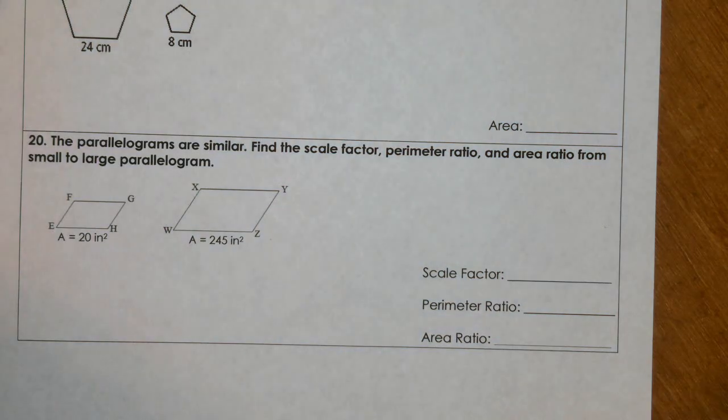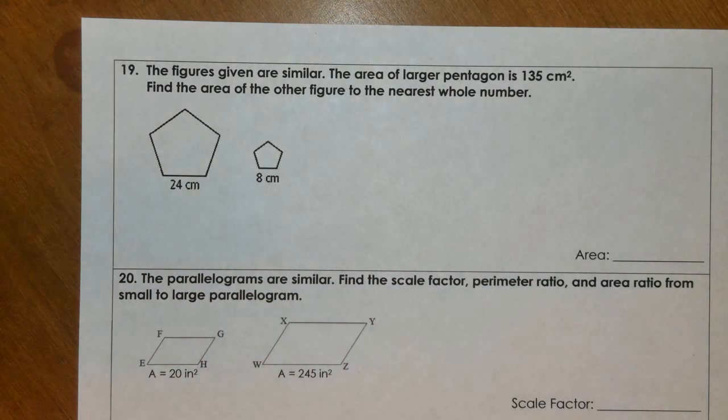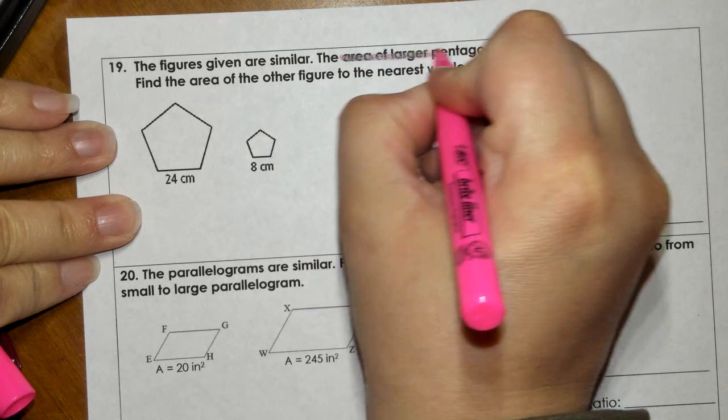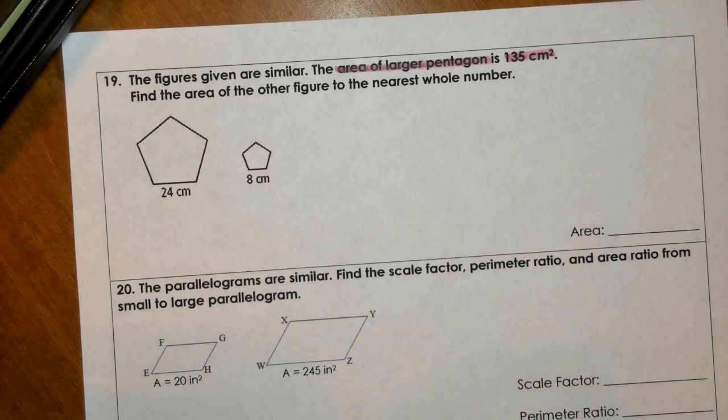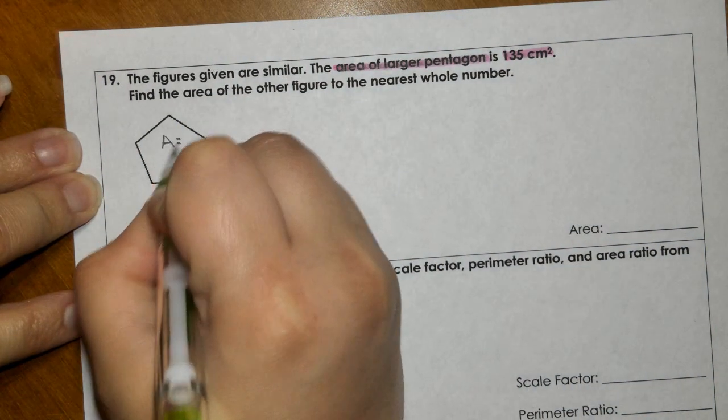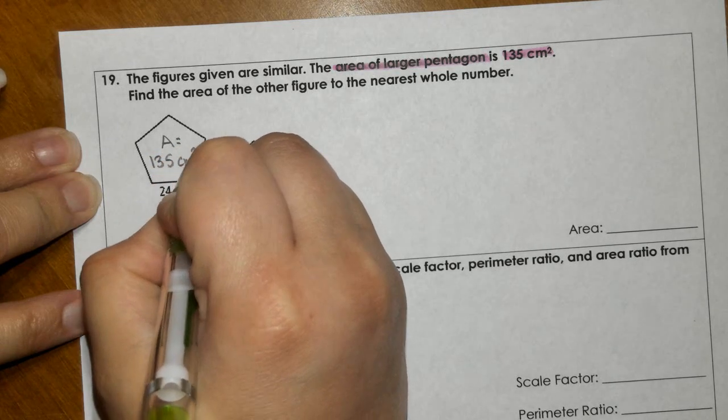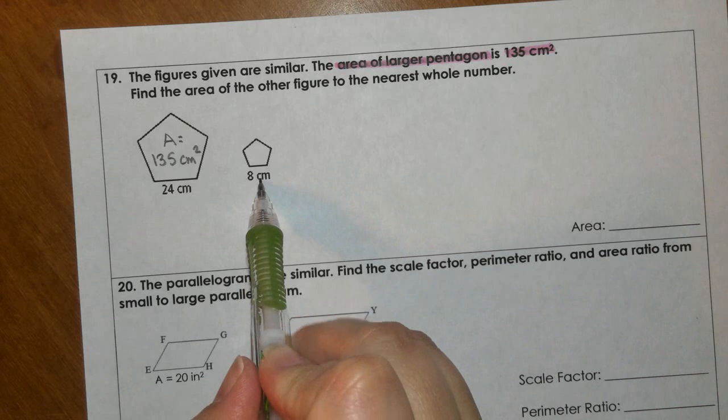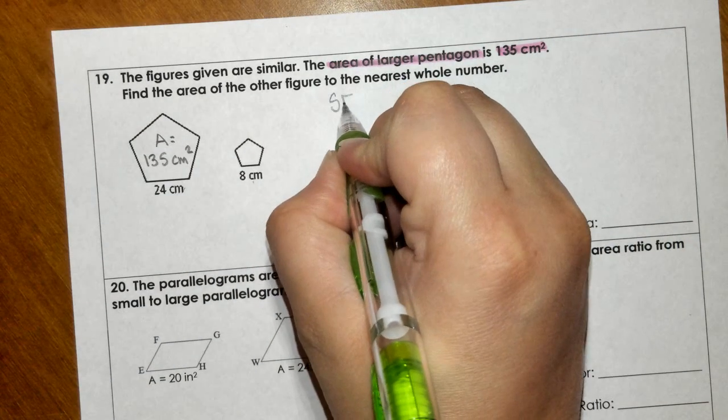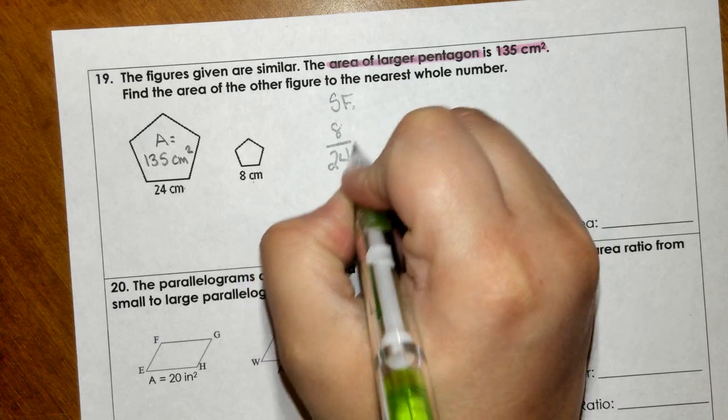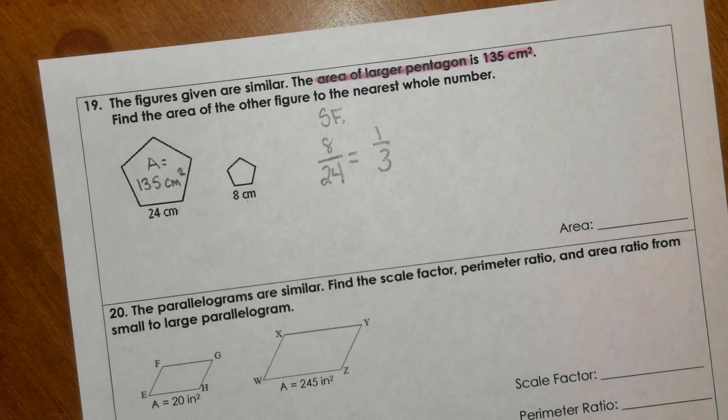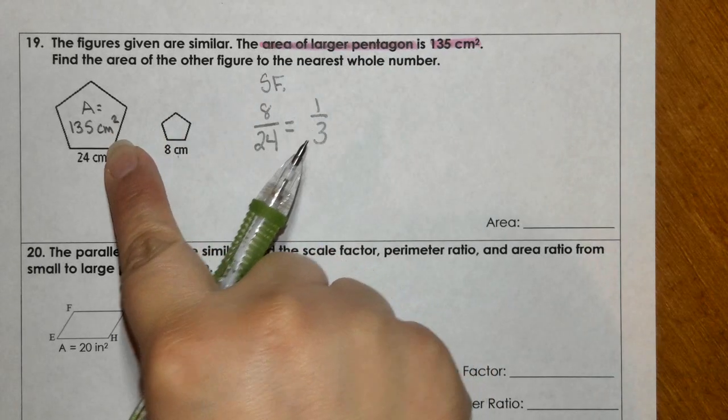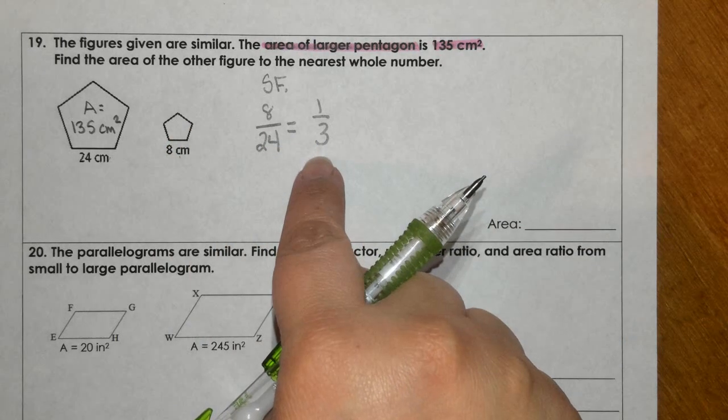We have 2 more questions. So, for these 2, the figures given are similar. The area of the larger pentagon is 135 centimeters squared. So the fact that it's area of the larger pentagon at 135, that's very important. So, I know that the area is 135. Find the area of the other figure to the nearest whole number. So I need to get a scale factor. I'm going to take the 8 and the 24. So, I'm going to say SF, I'm going to say 8/24th reduces to 1/3rd. That's my scale factor.